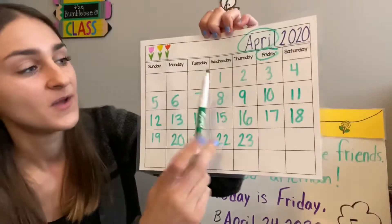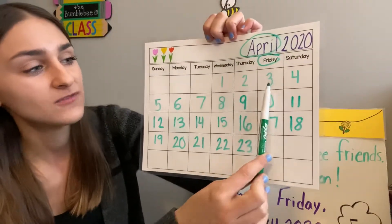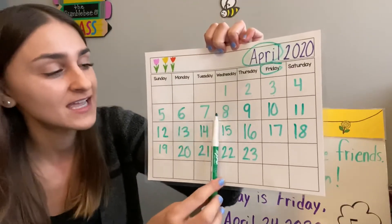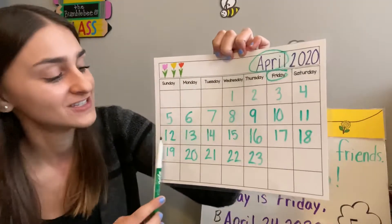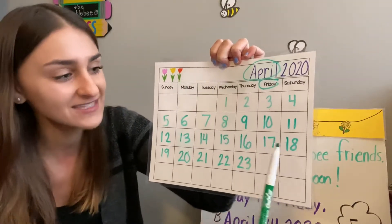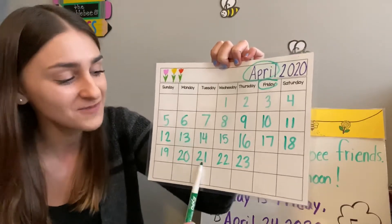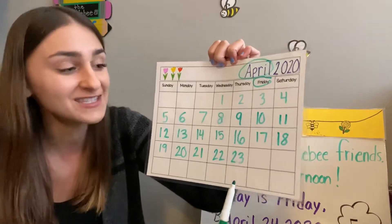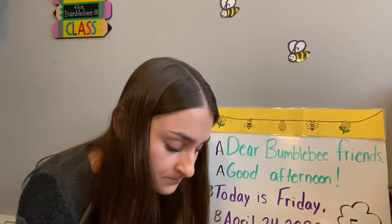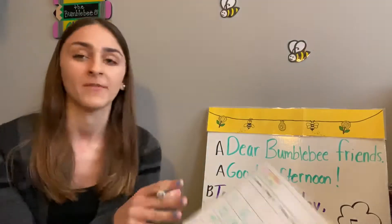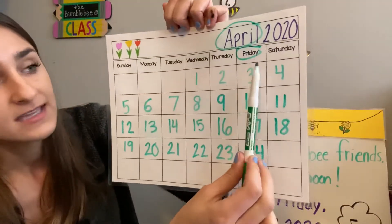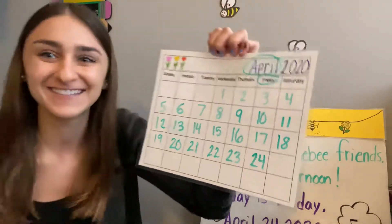One, two, three, four, five, six, seven, eight, nine, ten, eleven, twelve, thirteen, fourteen, fifteen, sixteen, seventeen, eighteen, nineteen, twenty, twenty-one, twenty-two, twenty-three, twenty-four. Today is the 24th. So let's take a moment to write that in. And let's say it all together — today is Friday, April 24th. Nice job.